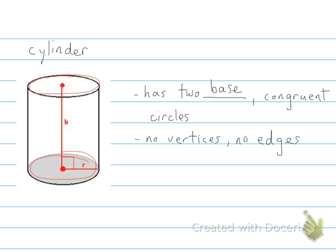They're congruent circles, same size, same shape. Everything is the same. And then, of course, there are no vertices and no edges.